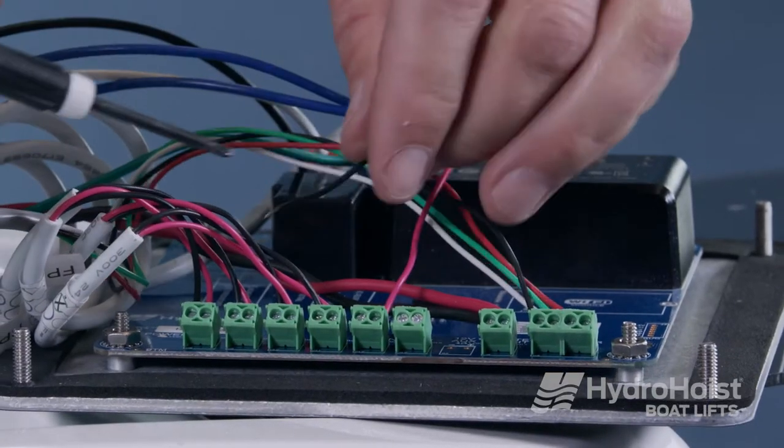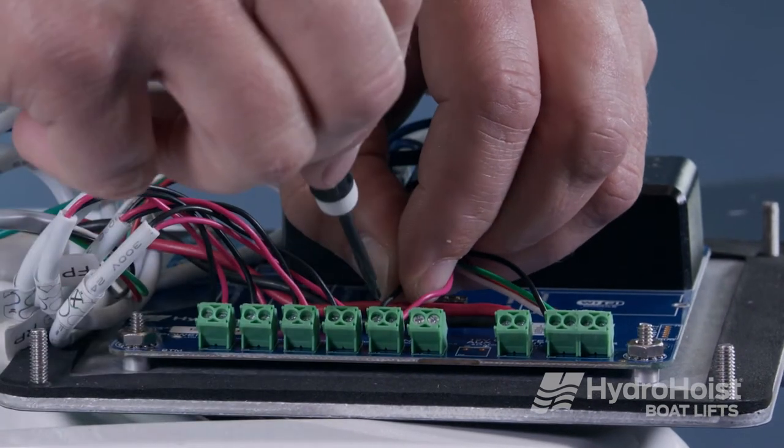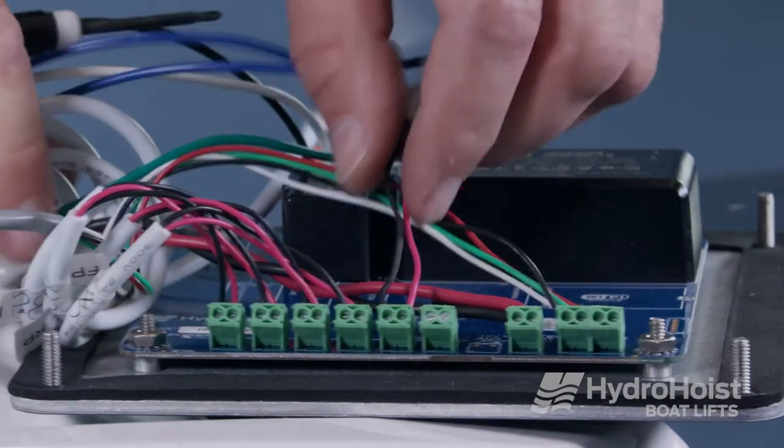Reconnect the valve leads to the main control board. Note the red lead should be connected to the positive connection on the board. Verify that they are secure by slightly tugging on the wires.